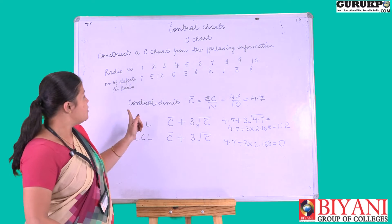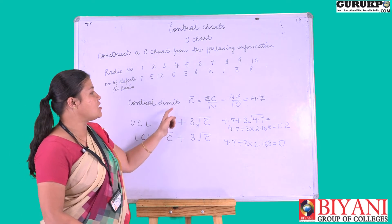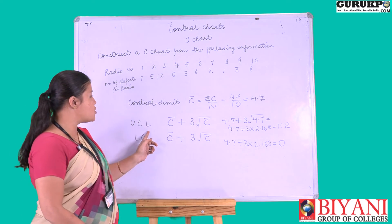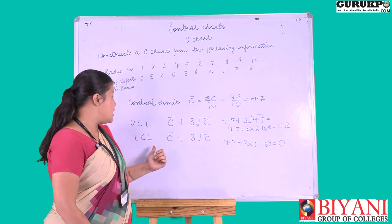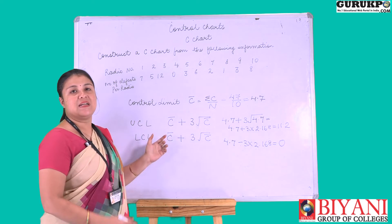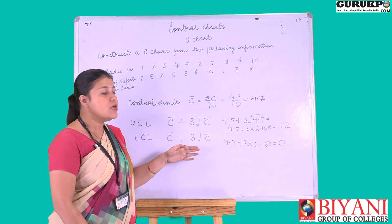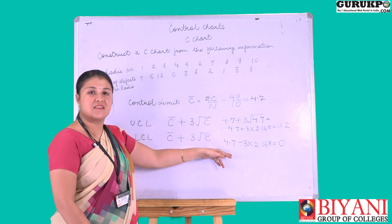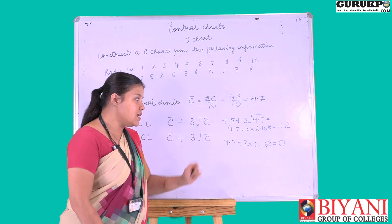So the control limit for the C control chart is 4.7, the upper control limit is 11.2, and the lower control limit — since the value arrived is negative — we count it as 0.